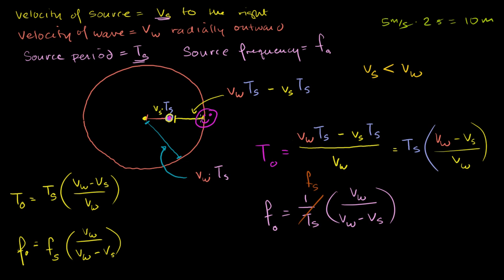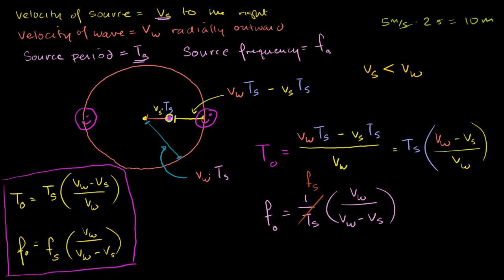We said: how long will it take to travel that distance? It's traveling at a speed of v sub w. That tells you the observed period for the observer in the path of the source. We calculated that right here, and then the observed frequency is just the inverse of that. These formulas apply to the case of the source traveling in the direction of the observer.